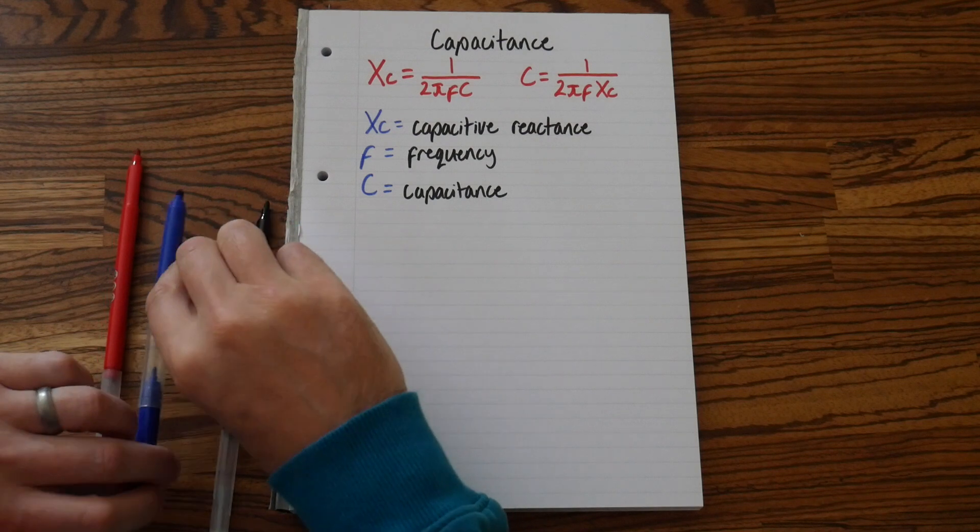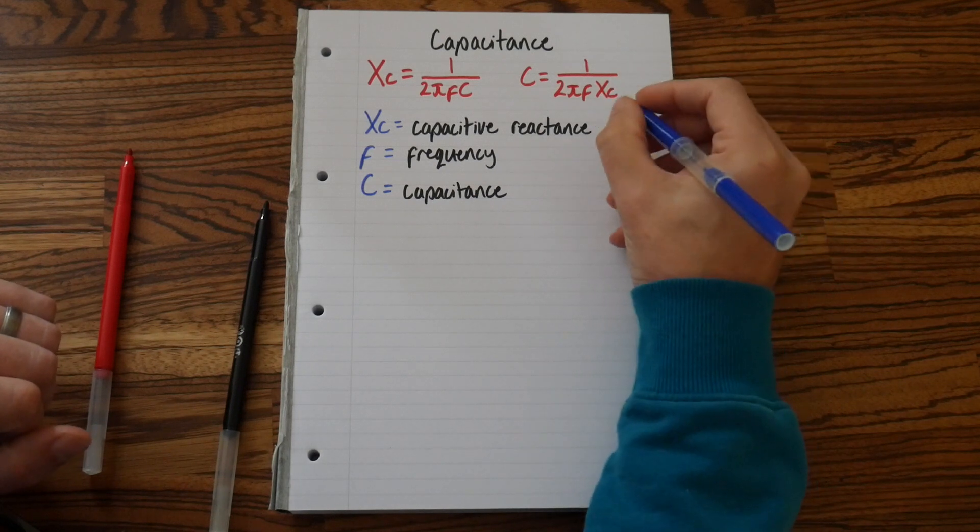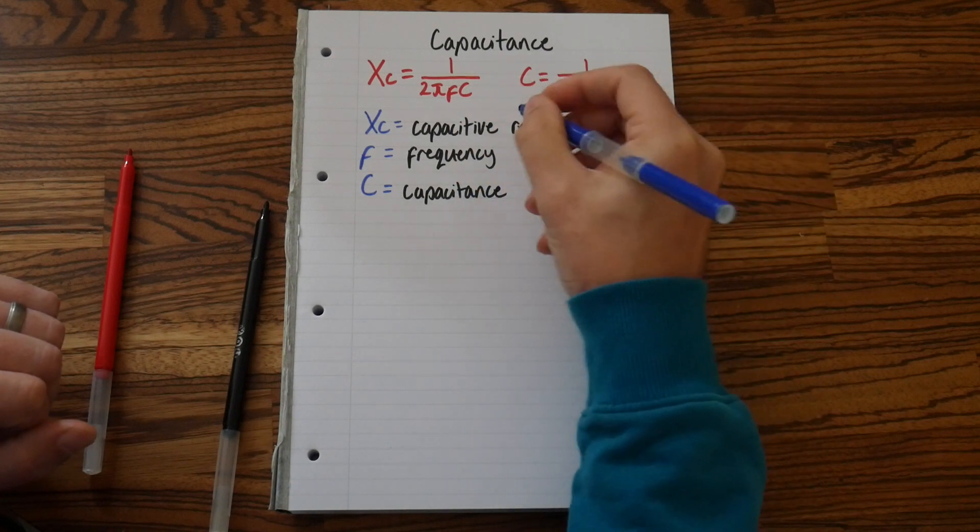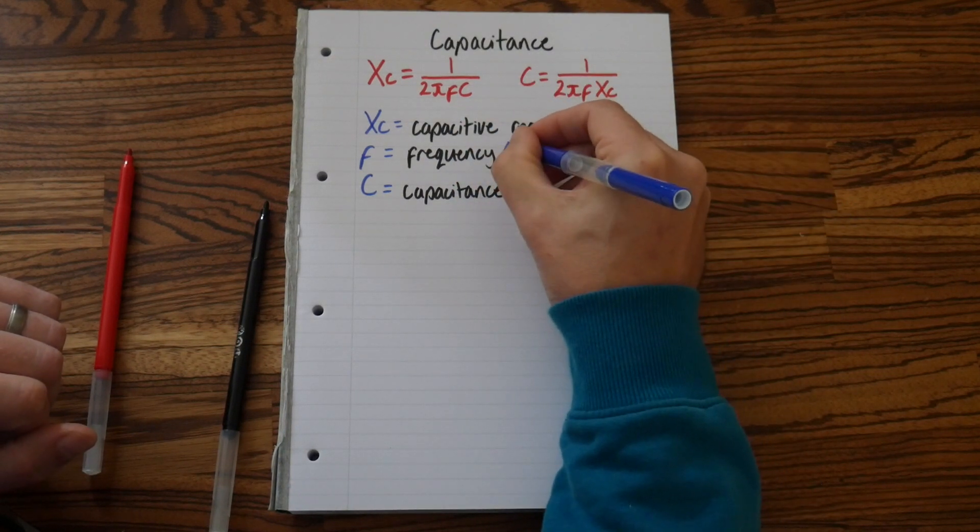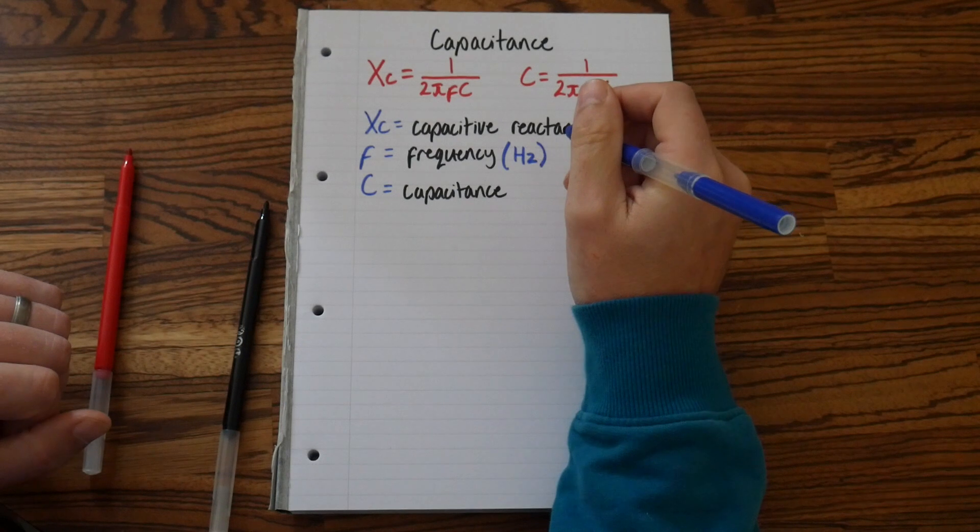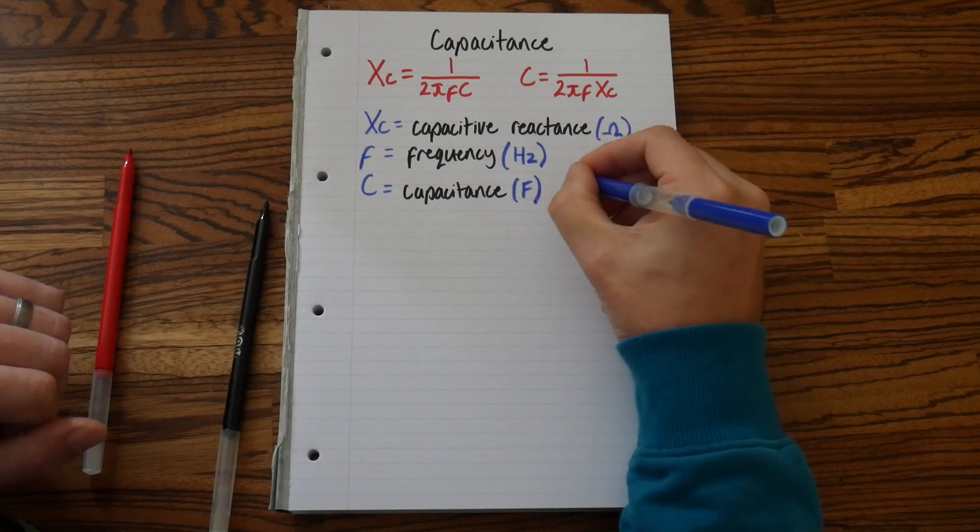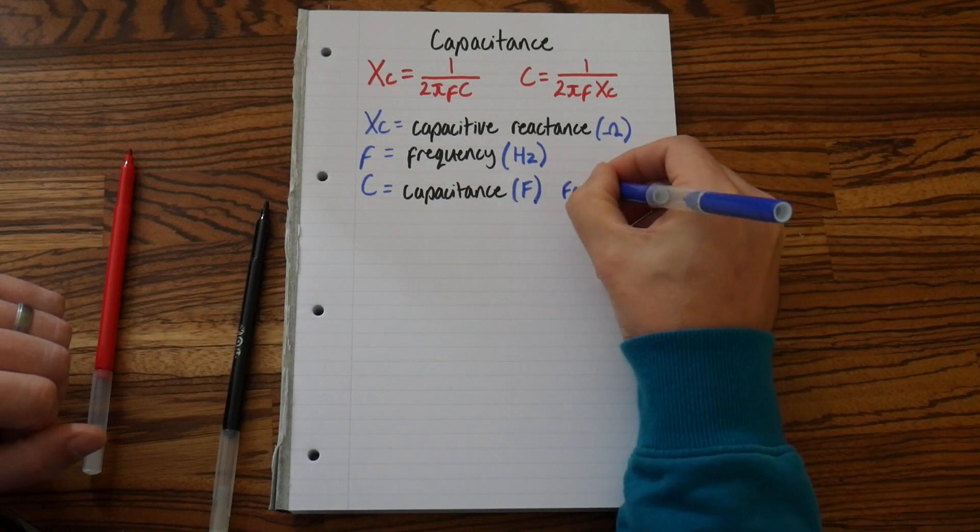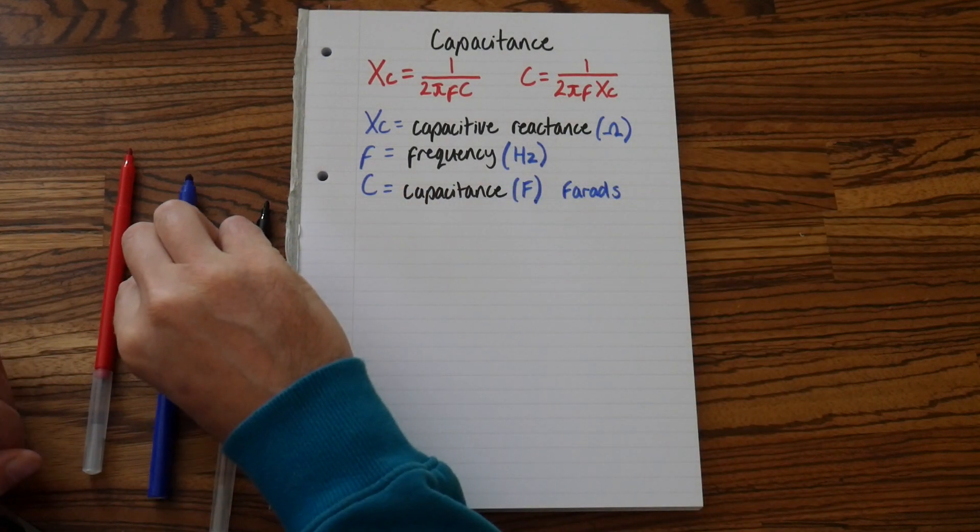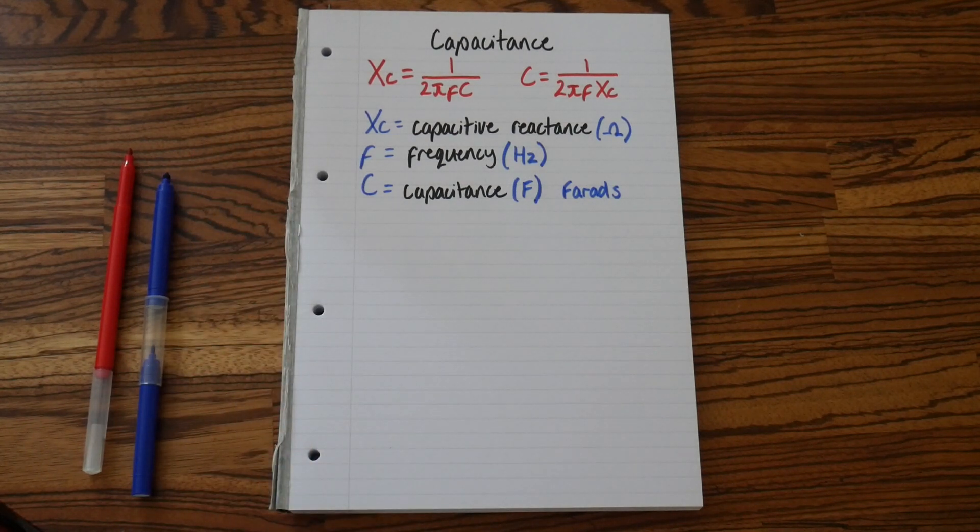And let's write down what our SI units are. So the SI unit for capacitive reactance, well that is measured in ohms. Frequency, as always, is Hertz, capital H lowercase z. And capacitance is measured in a capital F farads. So let's make a little note of that. Farads. And there are the formulas for capacitance. Now let's do a little bit more to our revision notes.